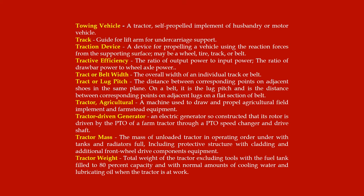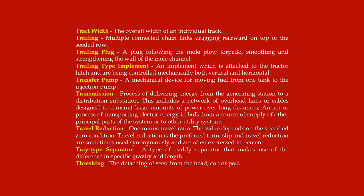Tractor-driven generator: an electric generator so constructed that its rotor is driven by the PTO of a farm tractor through a PTO speed changer and drive shaft. Tractor mass: the mass of the unloaded tractor in operating order with tanks and radiators full, including protective structure with cladding and additional front wheel drive components. Tractor weight: the total weight of the tractor excluding tools, with the fuel tank filled to 80% capacity and with normal amounts of cooling water and lubricating oil when the tractor is at work. Tracked width: the overall width of an individual track.